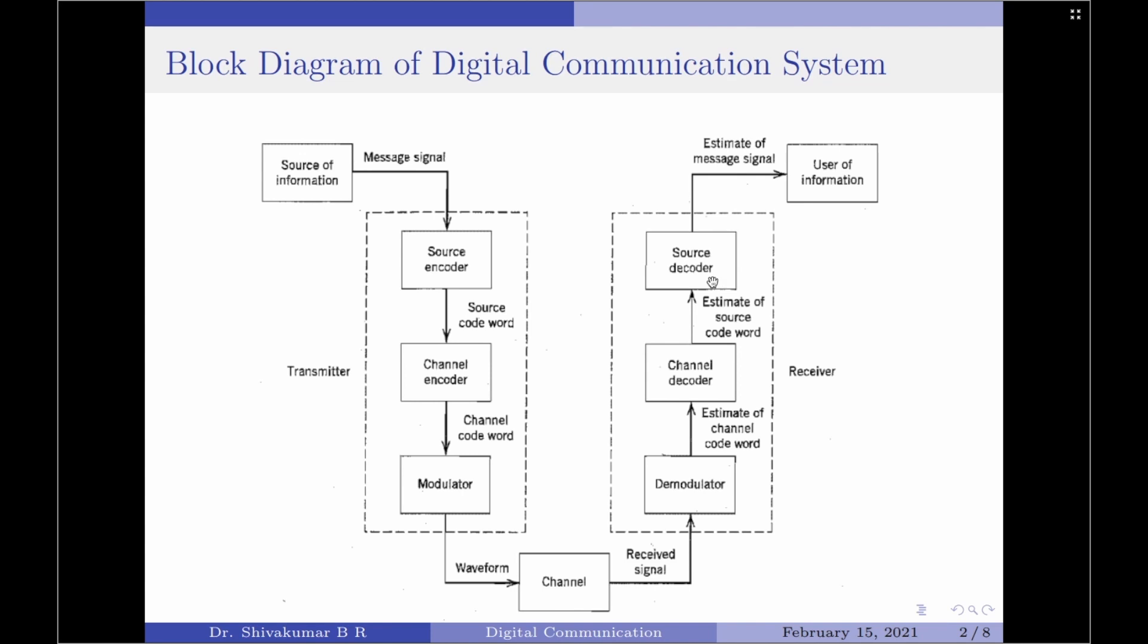Since the source encoder mapping is one-to-one, the source decoder simply performs the inverse operation and thereby delivers to the user destination a reproduction of the original digital source output. It has to be noticed the representation of the output is in fact an estimate of the transmitted signal and usually not an exact replica. The primary benefit gained from the application of source encoding is a reduced bandwidth requirement.